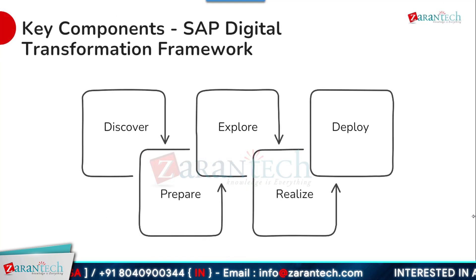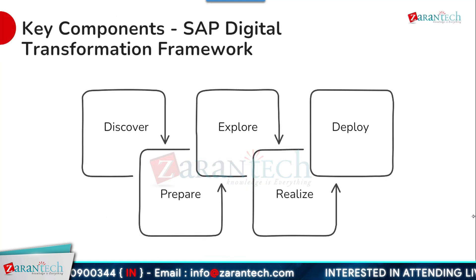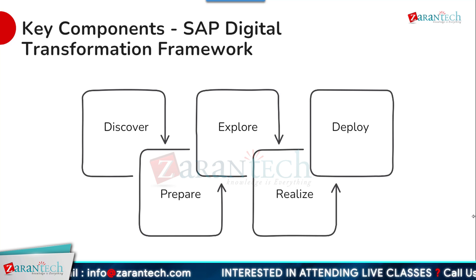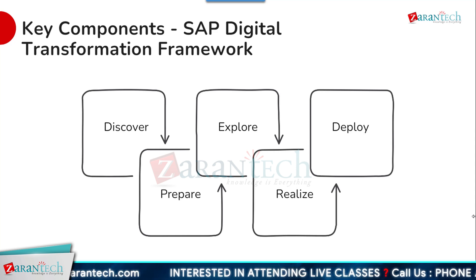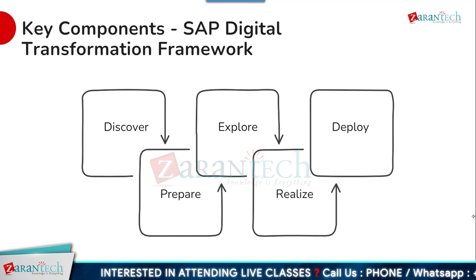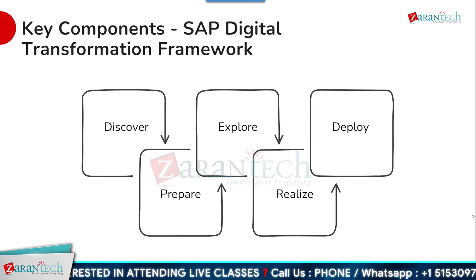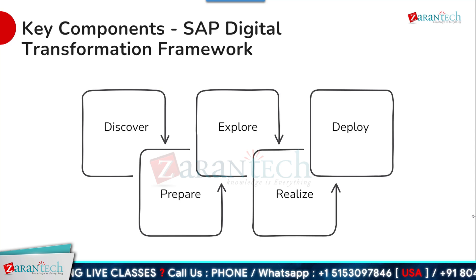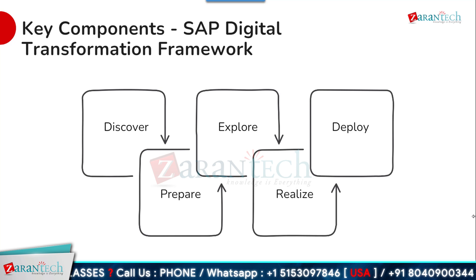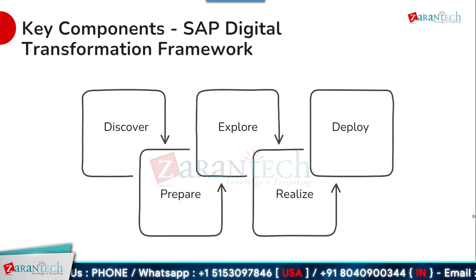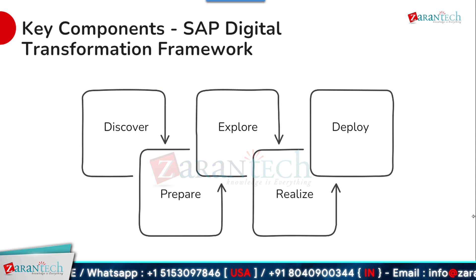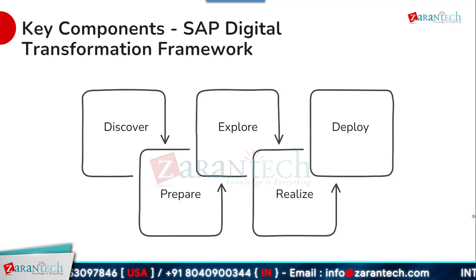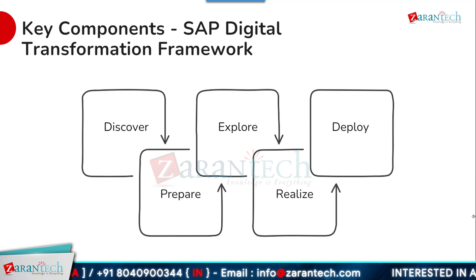Let us now dive into the key components of the SAP Digital Transformation framework. The framework consists of five key components. The first is Discover, which involves identifying the organization's digital transformation goals and objectives. Next is Prepare, where organizations assess their readiness for digital transformation and identify any gaps or challenges. The Explore phase involves identifying the SAP technologies that will enable the organization's digital transformation. In the Realize phase, the organization implements and integrates SAP technologies into its operations. And finally, the Deploy phase involves rolling out the SAP solutions across the organization and ensuring successful adoption.